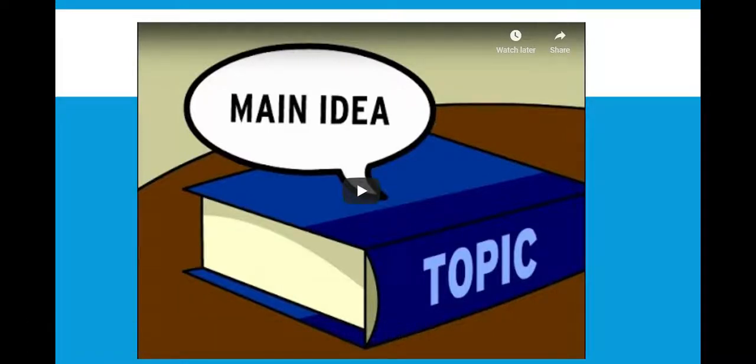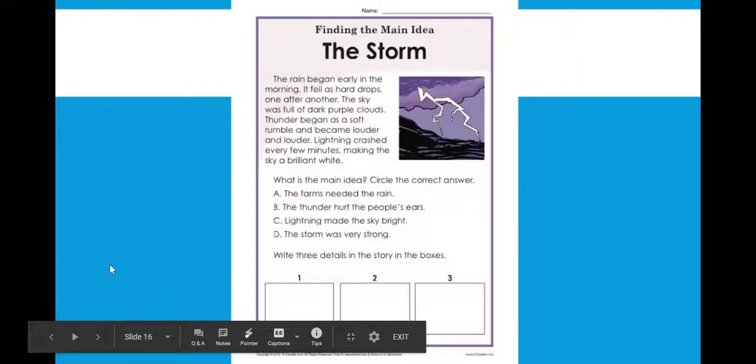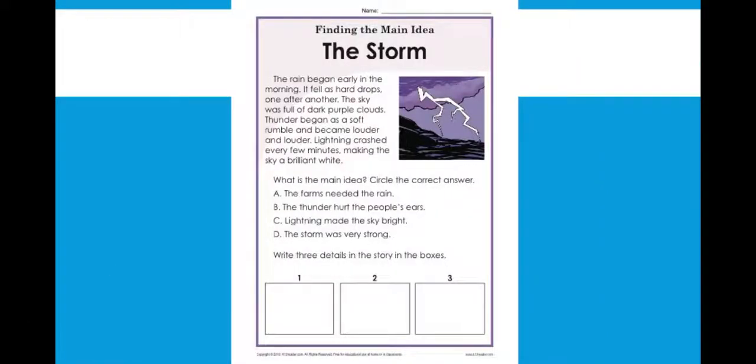So whenever we're reading something, there's three things that they said would be in the story. What's the first thing? The subject. That is who or what the story is about. Then we have the main idea, which is what the author wants us to know. The gist, the big idea, what it is mostly about. And then we have the key details. So we're going to look at a story and see if we can find those three things together.